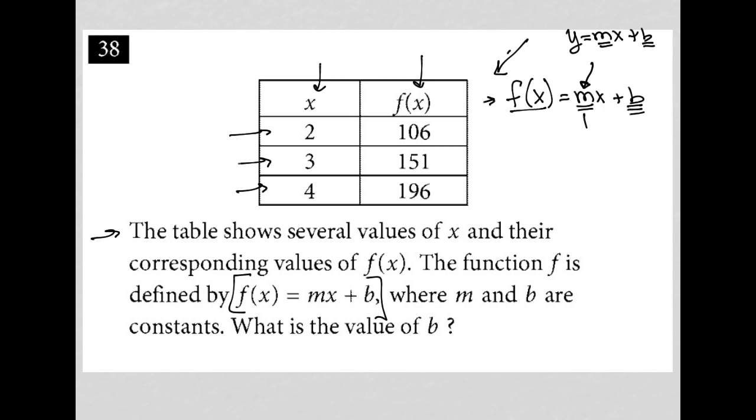So how do we find m? Well, m is the slope and it is rise over run, which translates to the difference in y values over the difference in two x values.